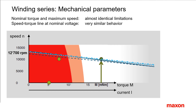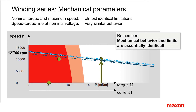Points to remember: for a given motor type, the mechanical behavior and the motor limits are essentially identical regardless of which winding is taken. From a mechanical point of view, load operating points can easily be reached with any winding.